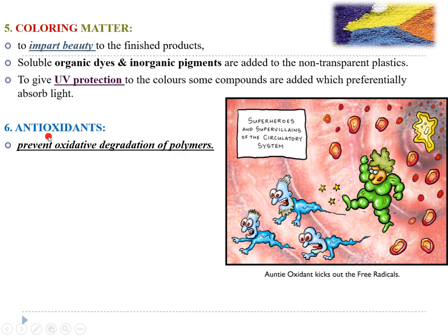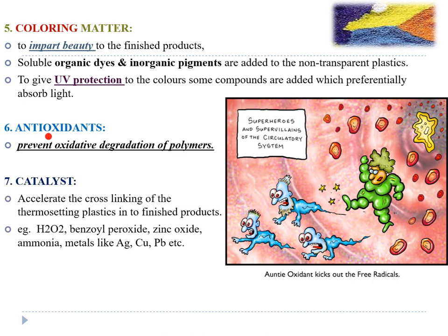Next are antioxidants. Oxidation is a reaction responsible for spoiling many things — our food gets decomposed by oxidation through oxygen free radicals. In our body, the aging process is also due to free radicals. If we can trap those free radicals, we decrease the decomposition rate. Similarly, plastic is an organic compound that can be subjected to decomposition due to oxidative free radicals, so we add antioxidants to prevent the degradation of the polymers.